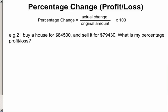So the change, the actual change is, well, if we paid $84,500 and sold it for $79,430, the change is going to be negative. We lost money. So it's $79,430, what we ended up with, minus what we spent. And that gives us a total of minus $5,070.